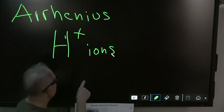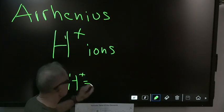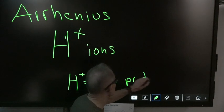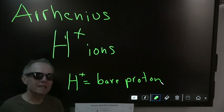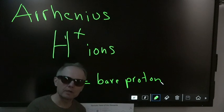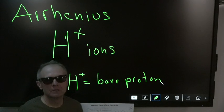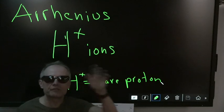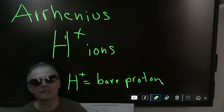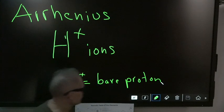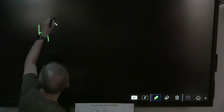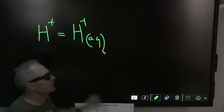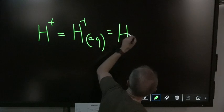What he didn't know is that H plus hooks up with the water molecule. So what Arrhenius said is: it's an acid if it has H plus ions in solution. But there are no free H plus ions floating around in water — they're all sucked up by the oxygen. So here's what an acid actually is: H plus equals H3O plus, which is hydronium.